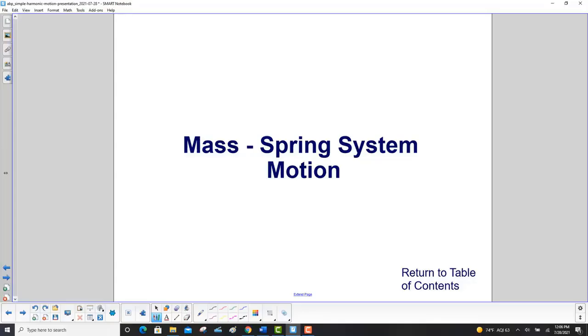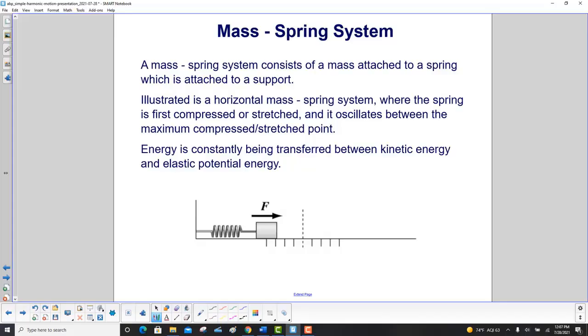Mass Spring System Motion. A mass spring system consists of a mass attached to a spring, which is attached to a support.